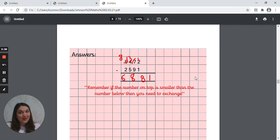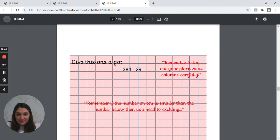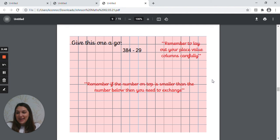So again, quite a lot of exchanging for that one. Okay, and there's one here that has not been laid out for you, so again a bit more of a challenge for those of you that want one, showing us your place value knowledge. So can you have a go at 384 take away 29 and making sure that those numbers go in the correct place value column?